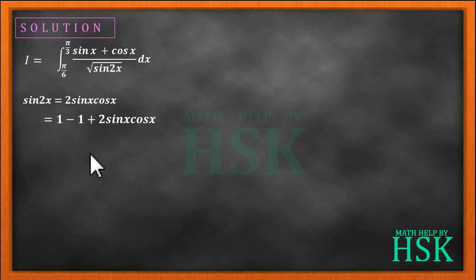I'm using the identity sin square x plus cos square x equal to 1. We get 1 minus sin square x minus cos square x plus 2 into sin x into cos x.